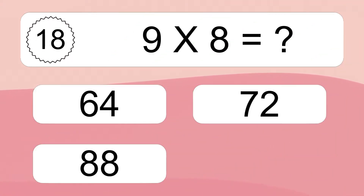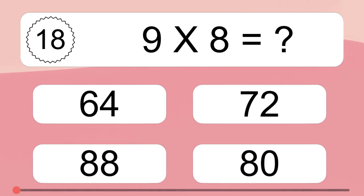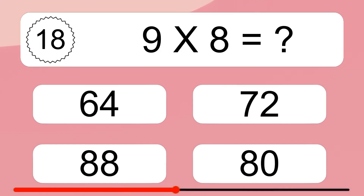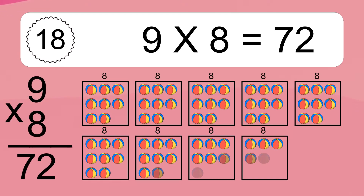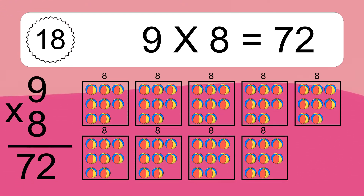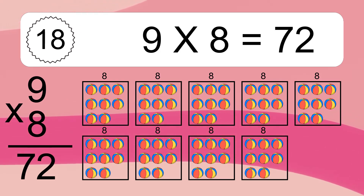Nine times eight equals what? Nine times eight equals seventy-two. We have nine boxes and each box has eight colorful balls inside. If you count all the balls in all the boxes together, you will have nine times eight balls. This equals seventy-two balls.